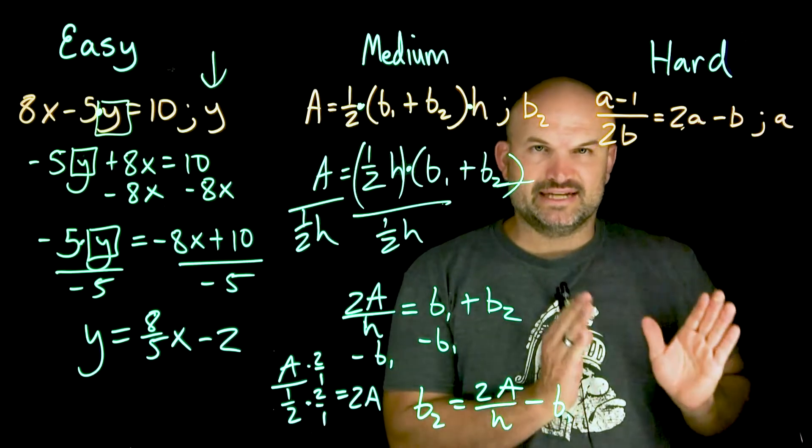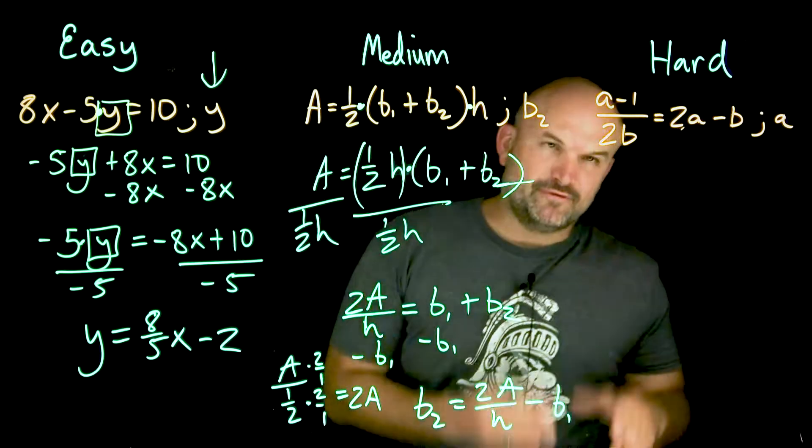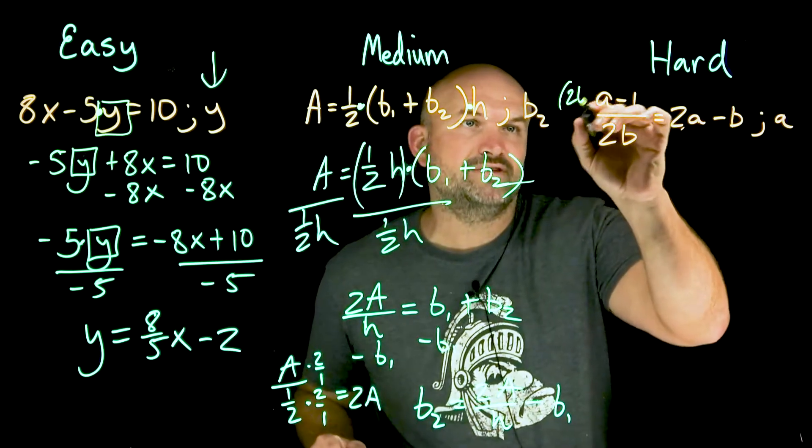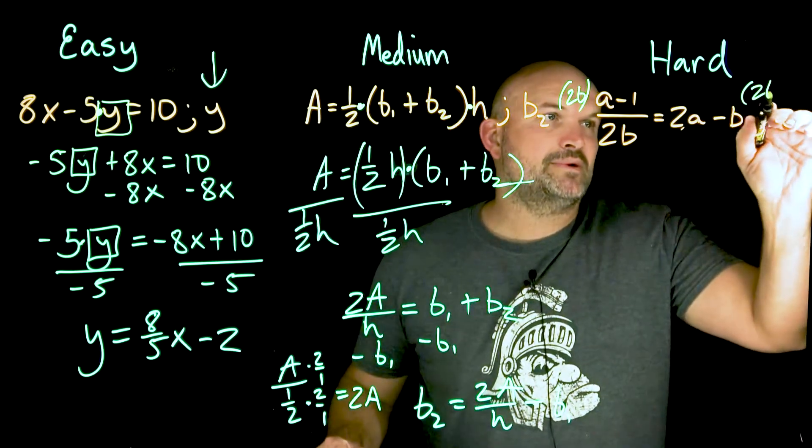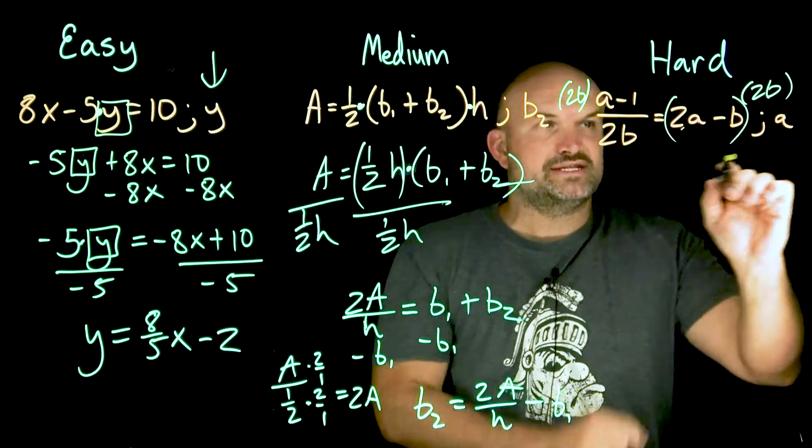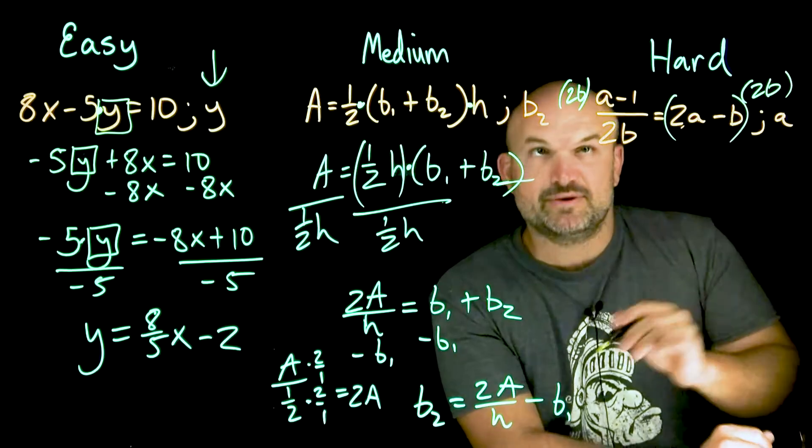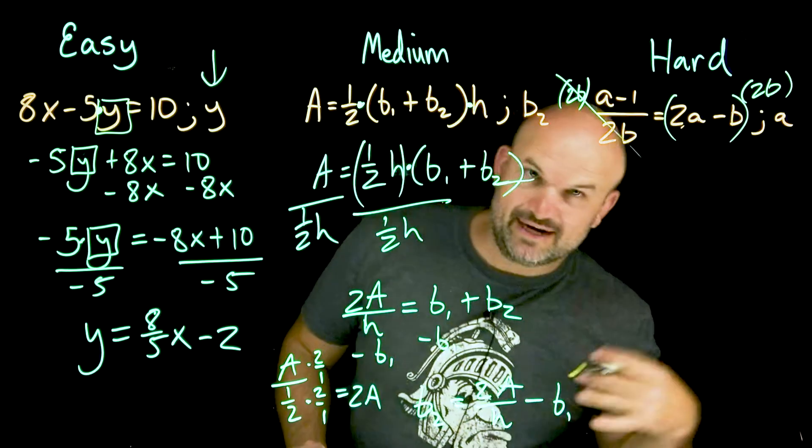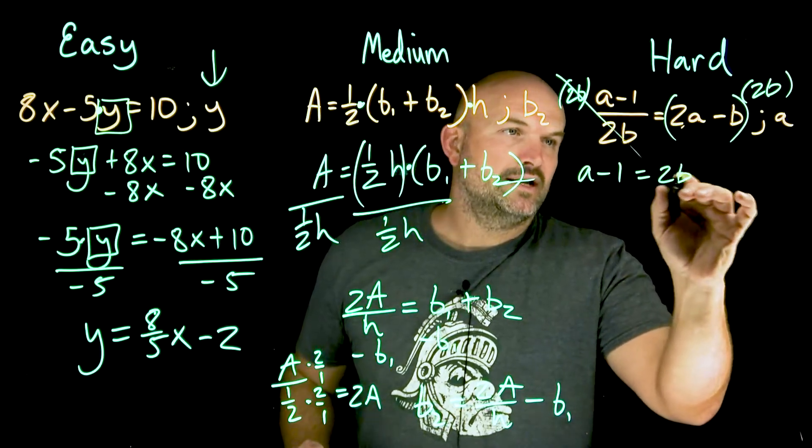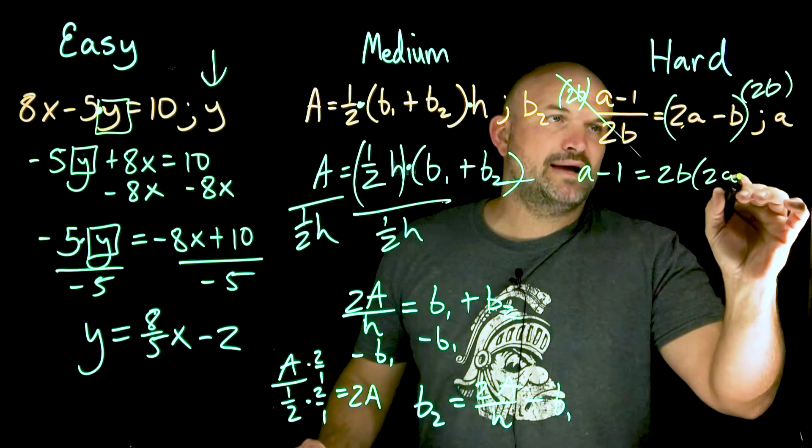So for me to be able to solve for a, typically we like to get the variables to the same side, right? But before I can do that, I wanna kind of get rid of this fraction. So to get rid of the fraction, I'm gonna multiply everything by 2b. Now, just remember when you're multiplying here on the left-hand side and the right-hand side, I gotta put this in parentheses, right? Because I have to multiply 2b times both terms in that expression. So those are now going to divide out or divide to one. So I'll have an a minus one is equal to a 2b times a 2a minus b.